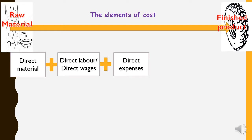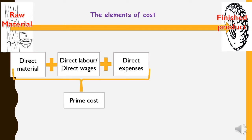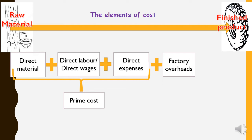That royalty payment becomes a direct expense. Direct material plus direct labor plus direct expenses gives us prime cost — prime means the main cost. After that, we take prime cost plus factory overhead. Factory overhead refers to indirect expenses of the factory. Direct material, direct labor, and direct expenses are direct costs we pay when running a manufacturing company.